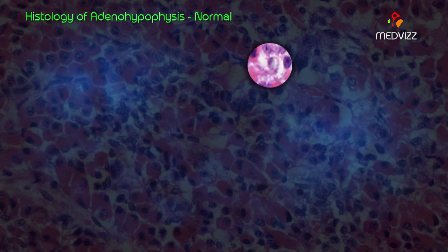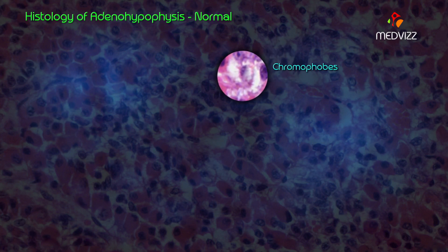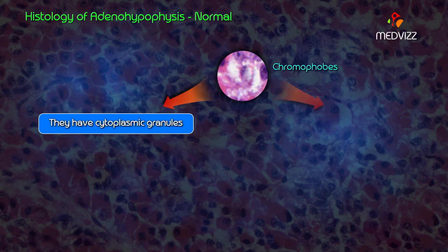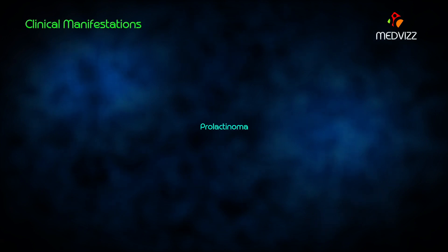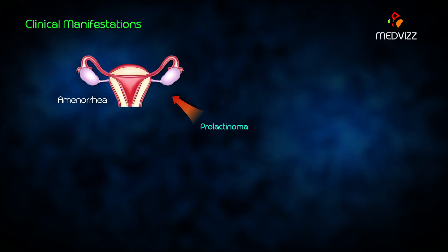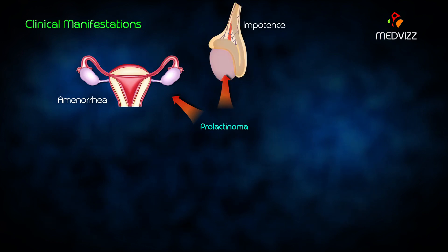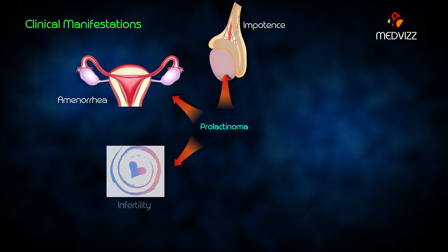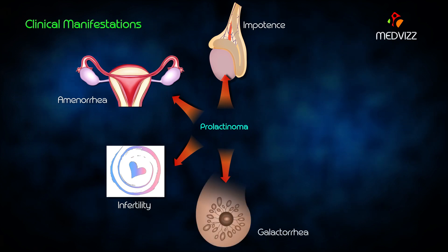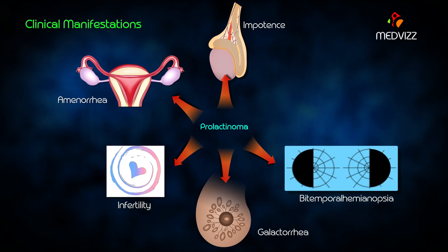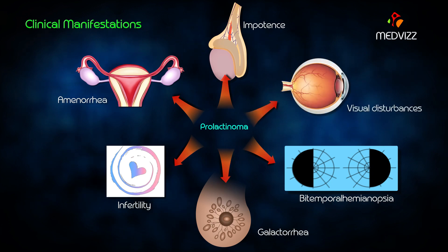The pale staining cells — chromophobes — have few cytoplasmic granules but may have secretory activity. The clinical manifestations of prolactinoma include amenorrhea in women and impotence in men as the most characteristic features. Infertility is seen in more than 80% of cases, galactorrhea is predominantly seen in women, and bitemporal hemianopsia is more commonly seen in macro adenoma due to possible compression of the optic chiasm.